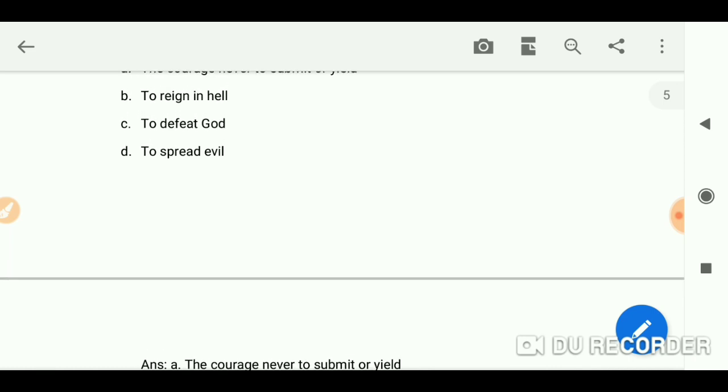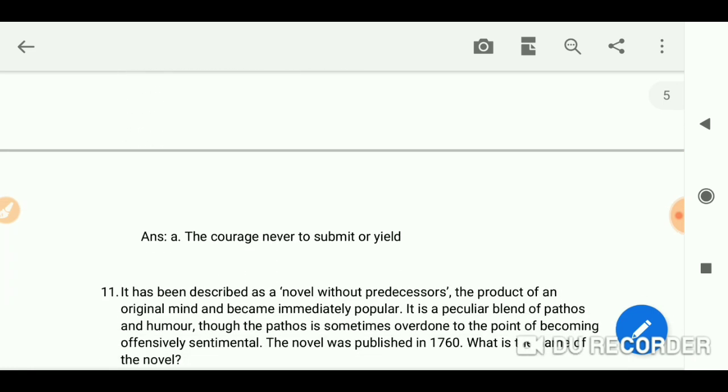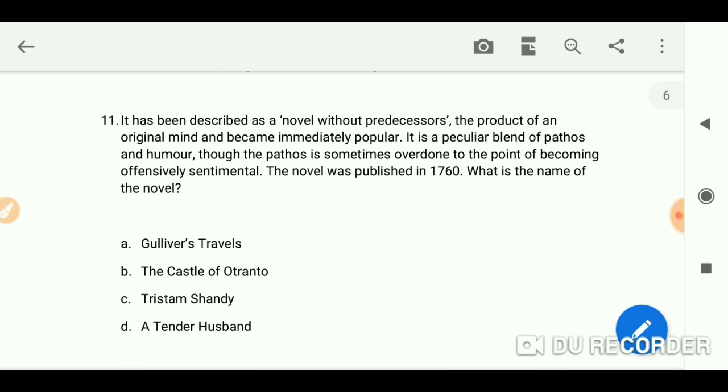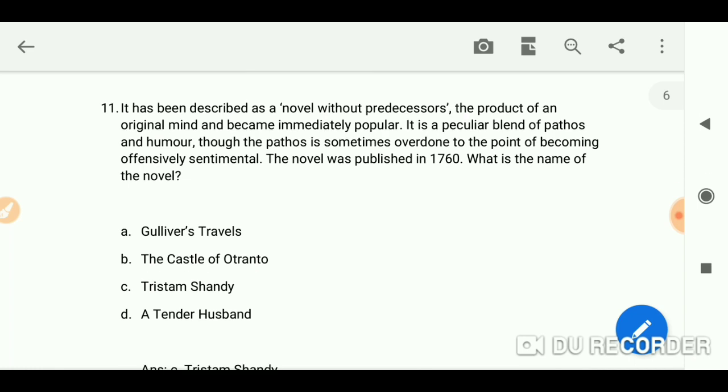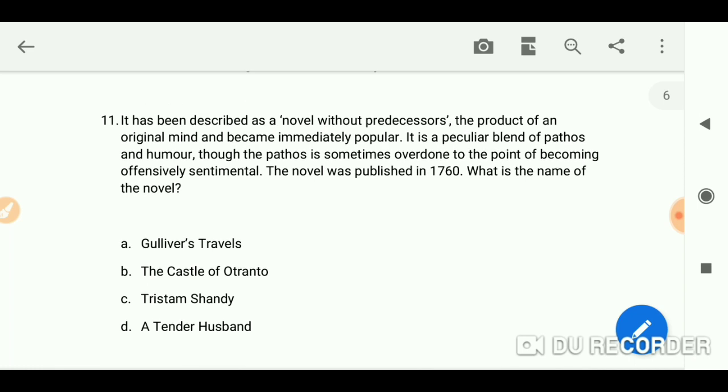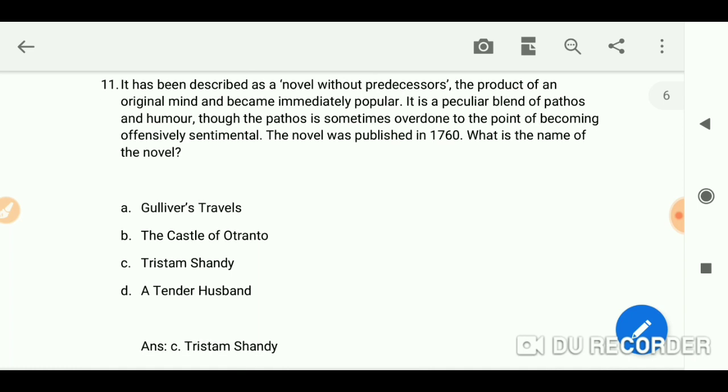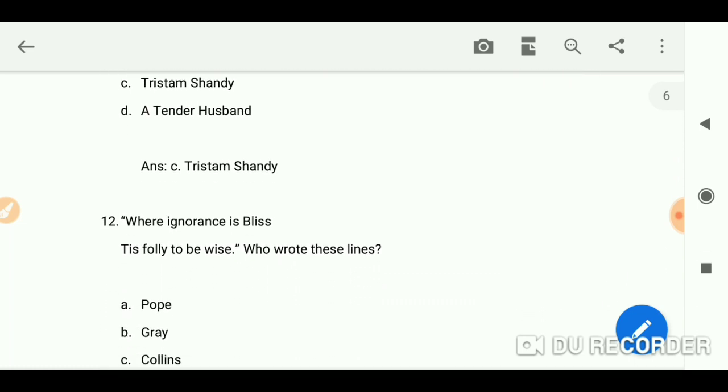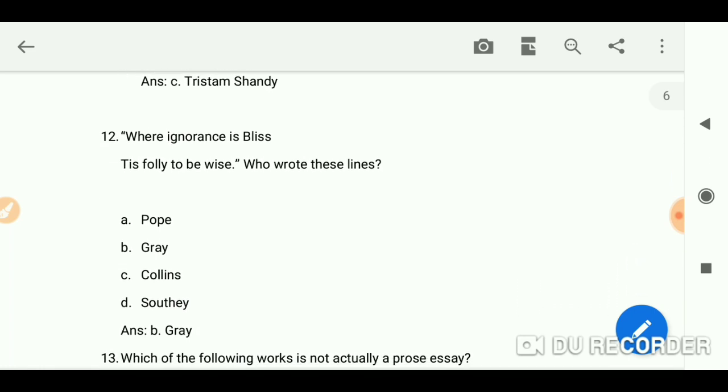It has been described as a novel without predecessors, the product of an original mind and became immediately popular. It is a peculiar blend of pathos and humor, though the pathos is sometimes overdone to the point of becoming offensively sentimental. The novel was published in 1760. What is the name of the novel? Tristram Shandy, option C. Where ignorance is bliss, 'tis folly to be wise. Who wrote these lines? Answer is B, Gray.